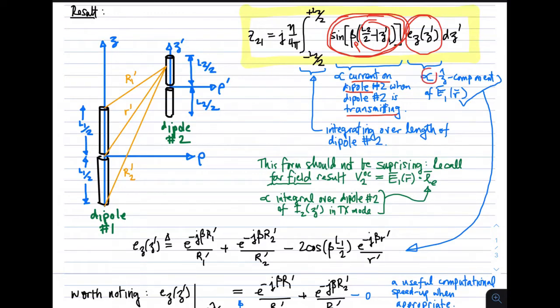This thing over here, e sub z, is proportional to the z hat component of e sub 1. That is, it's proportional to the component that's parallel to the dipole of the field being radiated by dipole 1 in the absence of dipole 2. That expression, e sub z, is given down here. The integral that we're doing is over the length of dipole number 2. They're primed to indicate that they depend on the current position that we're considering within the integral. Prime coordinates are things which are varying as we integrate.